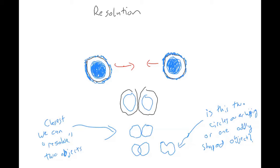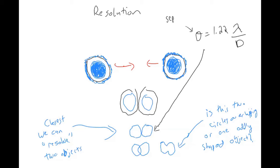There's a formula for this. The separation distance is measured in terms of an angle, and the formula is θ = 1.22 × λ / D, where θ is the separation angle, λ is the wavelength of the light, and D is the aperture diameter.